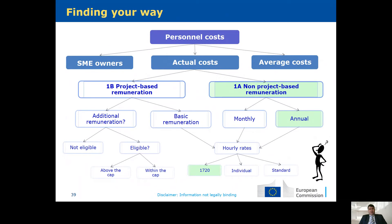This slide gives a flavor of how the beneficiary can declare costs. They can use actual cost or average cost, and for SME owners there is also a unit cost set up by the Commission. If using actual cost, there is an option between project-based and non-project-based remuneration — the concept of additional remuneration exists only for project-based remuneration. For non-project-based remuneration, there are options to calculate monthly or annual rates, with three options for productive time: 1720 hours per year, individual productive time, and standard productive time. Note that individual productive time is not available if monthly rates are used.